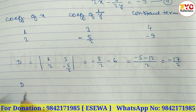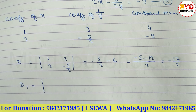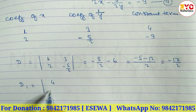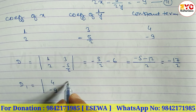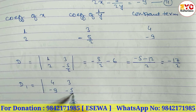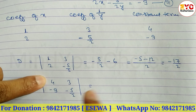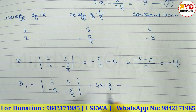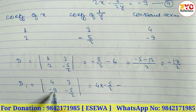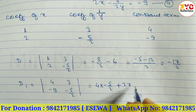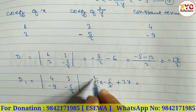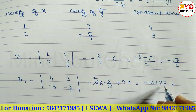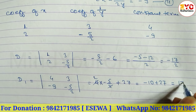Now find D1: replace the x-coefficients with the constant numbers. So the matrix uses constants 4, −9 and coefficients of 1/y: 3, −5/2. Calculate: 4 × (−5/2) − (−9) × 3 = −10 + 27 = 17.